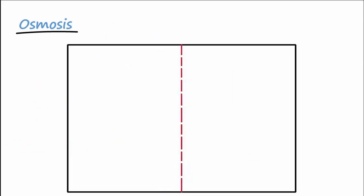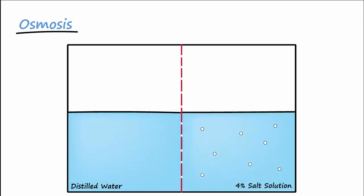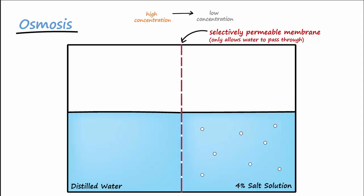Let's do the same experiment, but with a different container. Imagine that one side contains distilled water, while the other side is filled with a 4% salt solution. The solutions are separated from one another by a selectively permeable membrane that will only allow water to pass through it and not salt. The law of diffusion says water will go from high to low. Because distilled water is pure water, this is the area of high concentration. The salt water is the area where water is lower in concentration. So the distilled water will move through the selectively permeable membrane and begin to enter into the salt water solution.